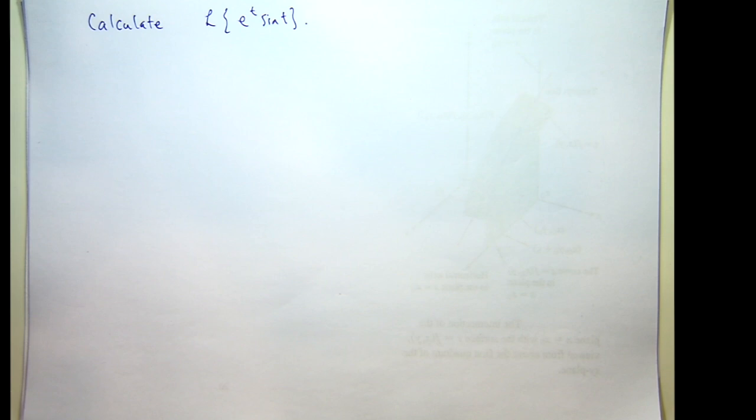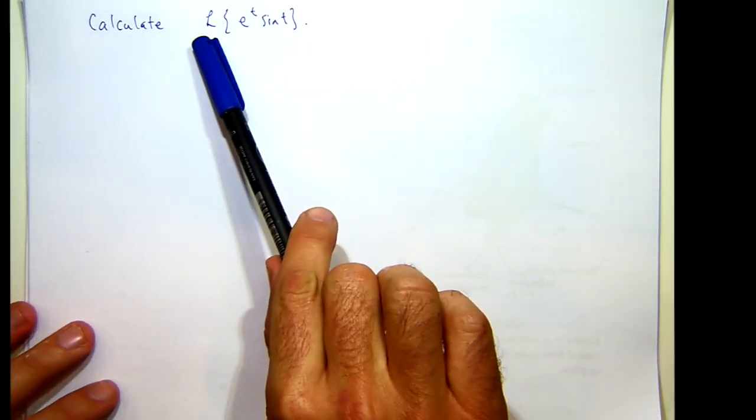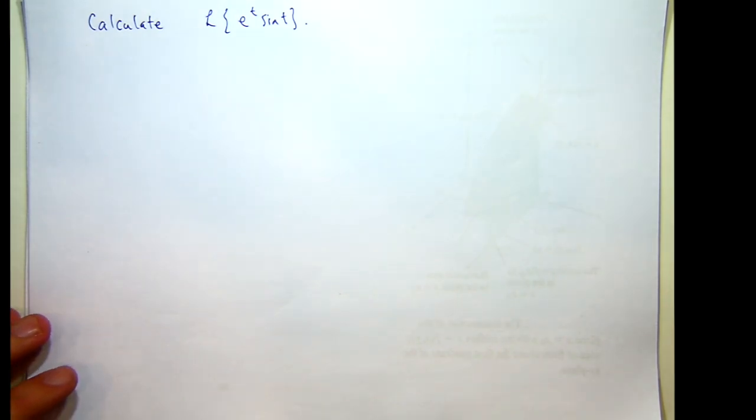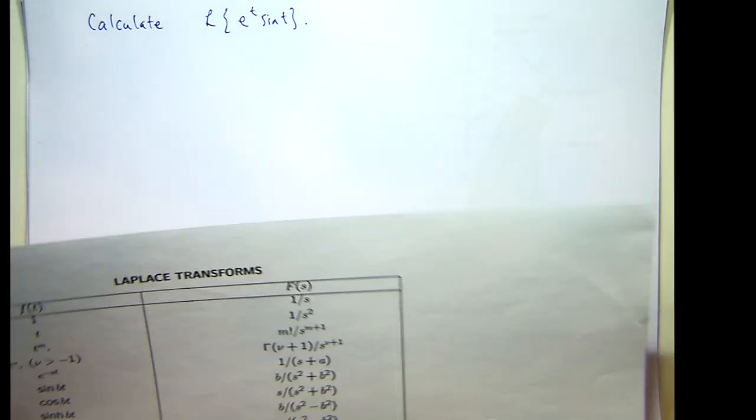In this example I'm going to talk about how to take the Laplace transform of this product of functions. This is a basic example and the underlying idea behind this example is to illustrate an idea known as the first shifting theorem.